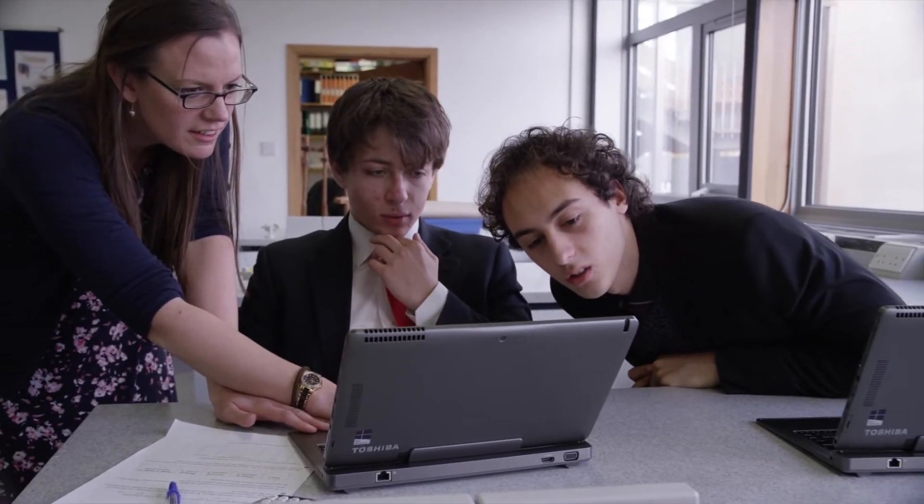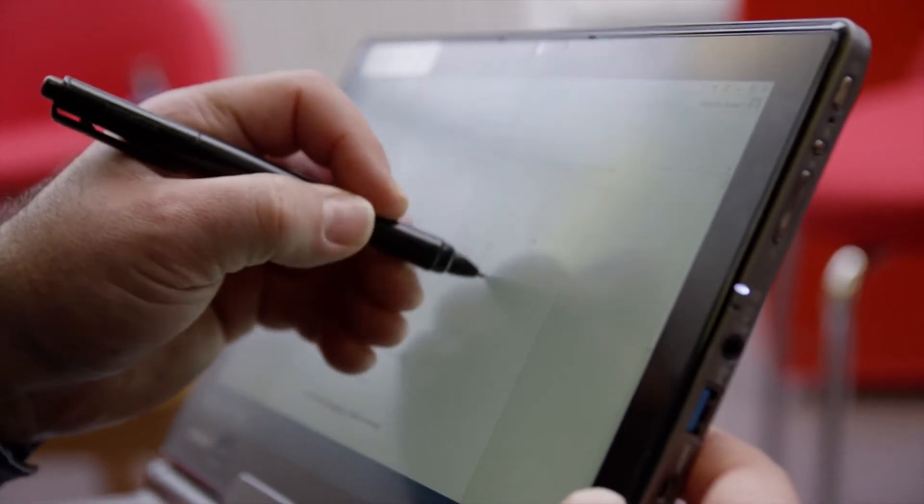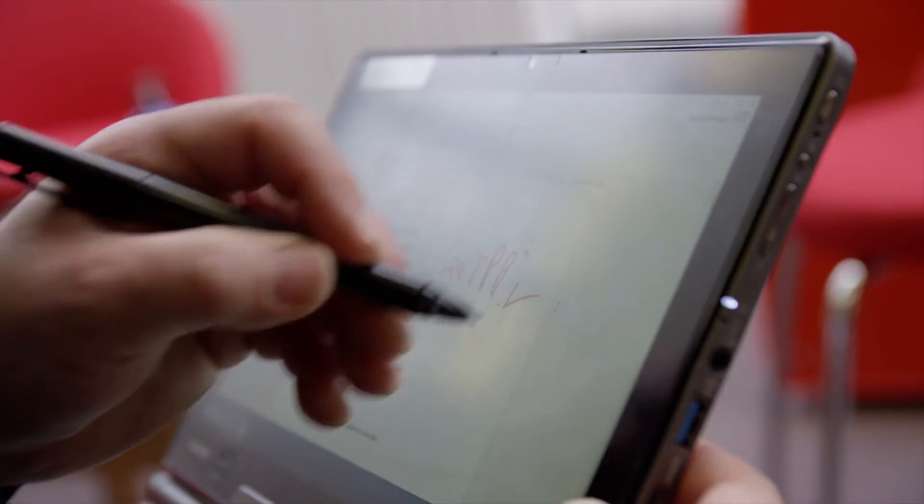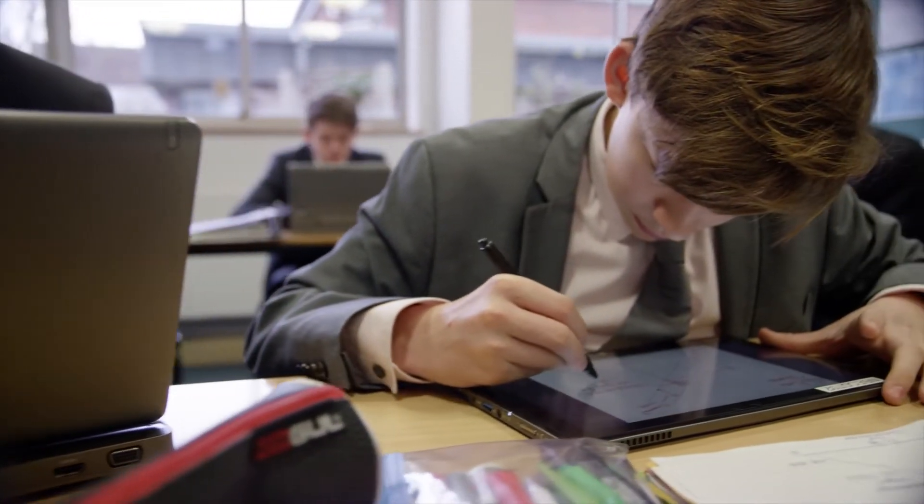The killer functionality for me with the Toshiba Z10T actually was the pen. As well as coming with a stylus you can get an optional pressure-sensitive pen. It's not battery powered and it actually means I can properly handwrite onto the screen and students can as well, so what that means is suddenly a completely paperless workflow is possible.